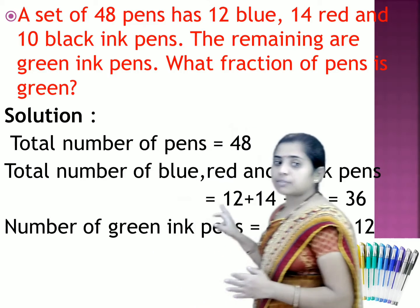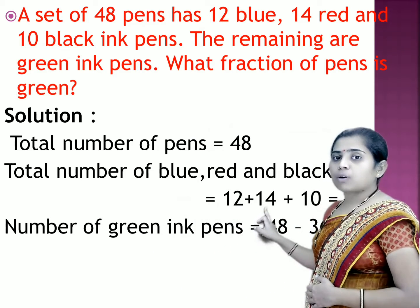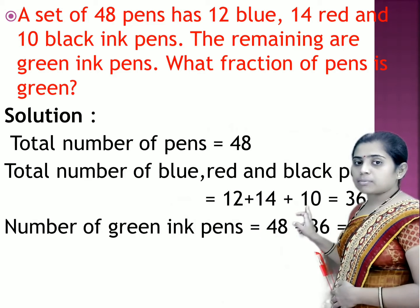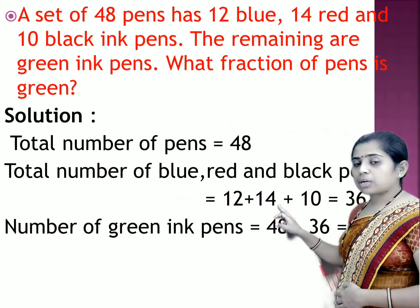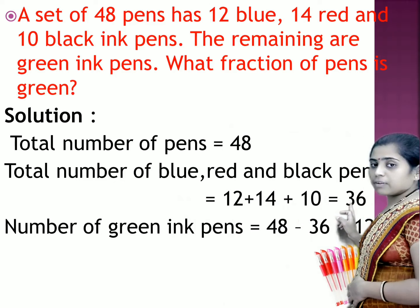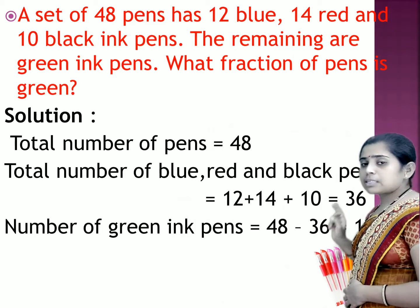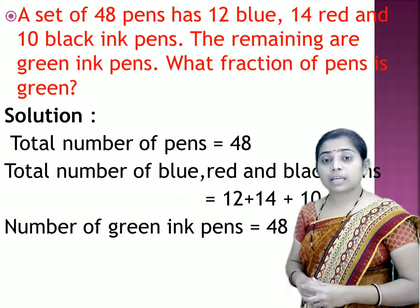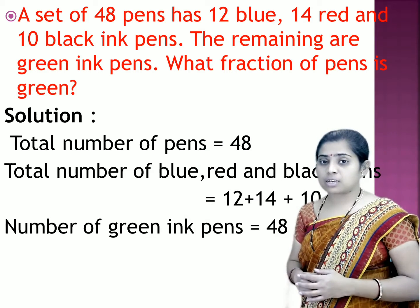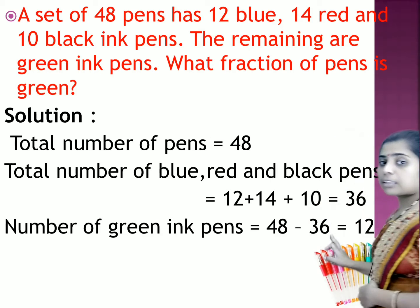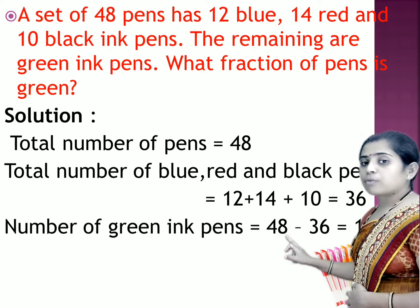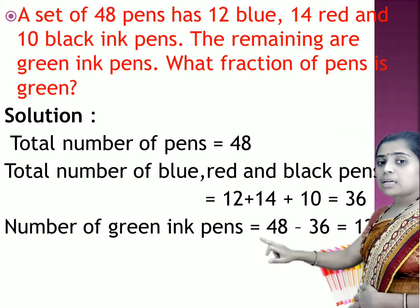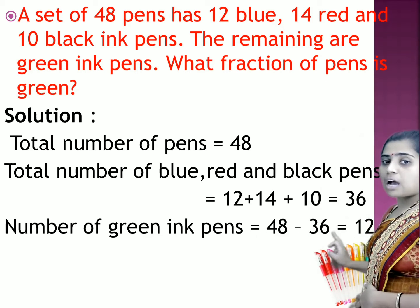There are 12 blue pens, 14 red pens, and 10 black pens. Let us add all three numbers: 12 plus 14 plus 10 is equal to 36. If we subtract 36 from the total number of pens, we will get the number of green ink pens. So, 48 minus 36 is equal to 12, meaning the number of green ink pens is 12.